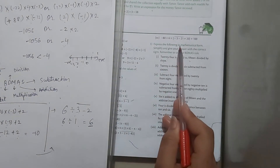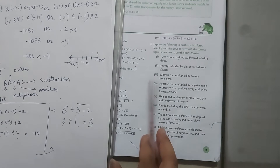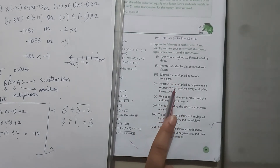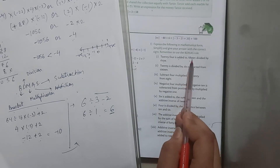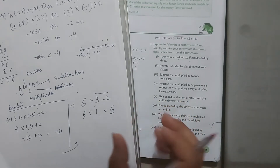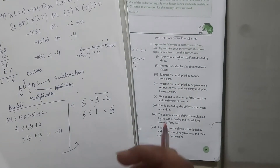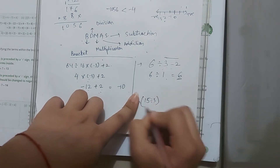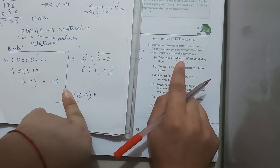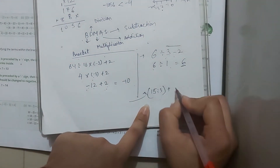Next: express the following in mathematical form, simplify, and give your answer with correct signs. Remember to use the BODMAS rule. In our previous class we did questions similar to this — we have a statement and we write it in mathematical form. Let's try the first one: 24 is added to 15 divided by 3. We have the term 15 divided by 3, and then 24 is added to it. So we write it as: 15 divided by 3, then add 24.